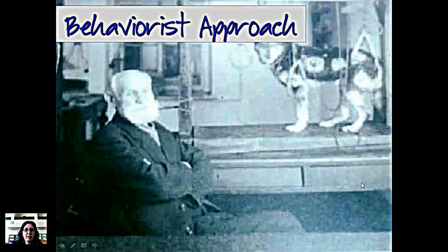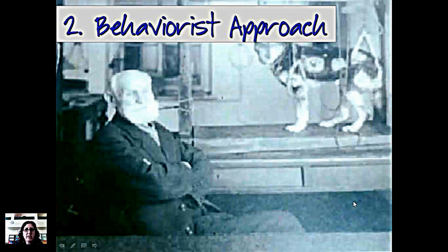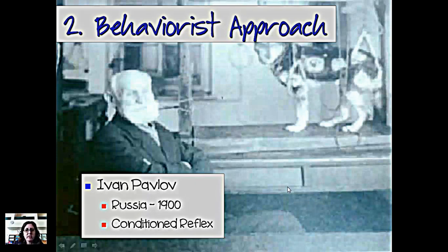The second theory or approach is called the behaviorist approach. This is Ivan Pavlov's famous drooling dogs. He was a Russian physiologist and in 1900 he won the Nobel Prize for his role of the conditioned reflex. He was actually studying the role of saliva in digestion and he discovered the conditioned reflex.